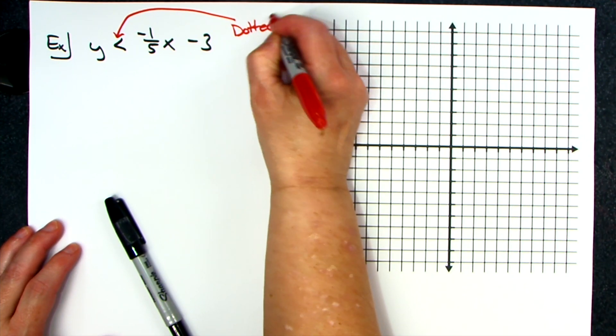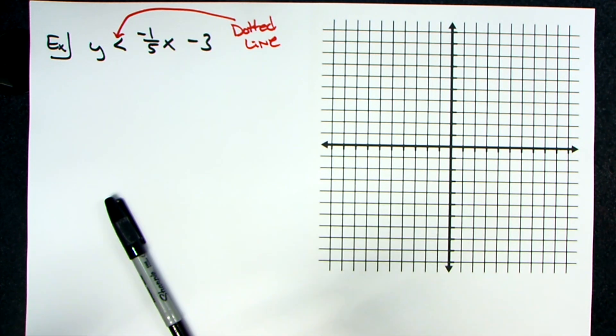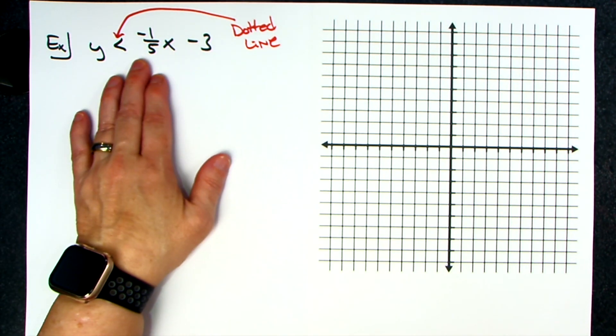There's no equal to part, so it's going to be a dotted line. We're still in slope-intercept form, which is what a lot of your lines are going to be. This is my y-intercept, this is my slope.